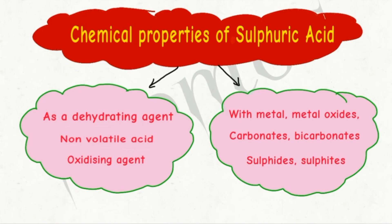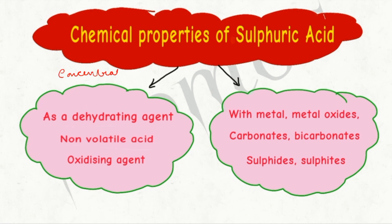Hi dears, this is Raji. In this video we are going to discuss about the chemical properties of sulfuric acid. Sulfuric acid will be exhibiting different properties in the dilute state as well as in the concentrated state, just like a coin has got two sides.